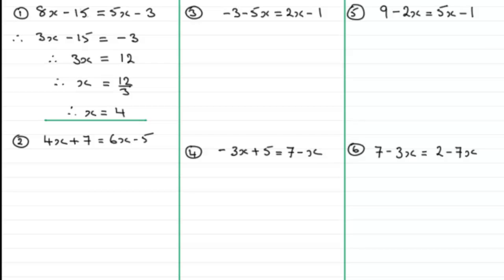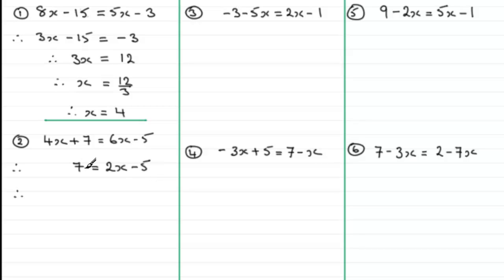I need to get rid of the plus 4x — because it's a plus in front of this 4x — by subtracting 4x from both sides. Subtracting 4x from the left leaves just the 7. On the right, 6x take away 4x gives me 2x, and then I've got the constant minus 5. To remove the minus 5, I add 5 to both sides: 7 plus 5 is 12, and on the right the minus 5 add 5 goes to zero.